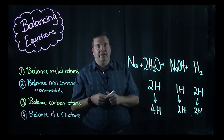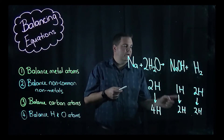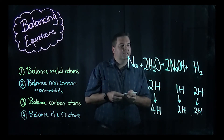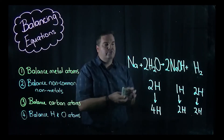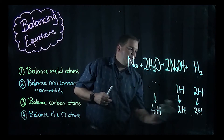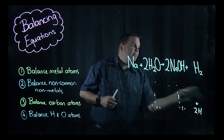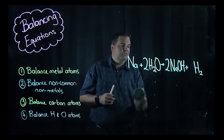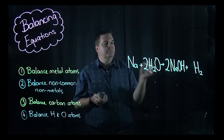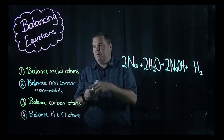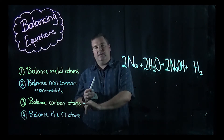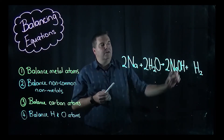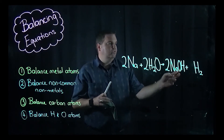Put a 2 in front of NaOH and a 2 in front of H2 to turn one hydrogen into two. This balances all hydrogens — four on both sides. However, this has now unbalanced the sodiums and oxygens, so go back to step one. We now have two sodiums on the right, so put a 2 in front of Na. No non-common non-metals, no carbons. Check oxygens: two oxygens on each side — balanced. Final equation: 2Na + 2H2O → 2NaOH + H2.